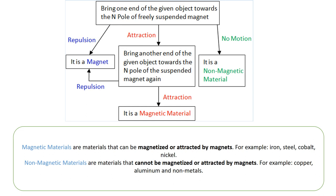We need to understand two terminologies: magnetic materials and non-magnetic materials. Magnetic materials are those that can be magnetized and attracted by a magnet — only four: iron, steel, nickel, and cobalt. Non-magnetic materials are all other metals and materials — copper, wood, aluminium — that cannot be magnetized or attracted by a magnet. In short, all metals except iron, steel, nickel, and cobalt are non-magnetic materials.